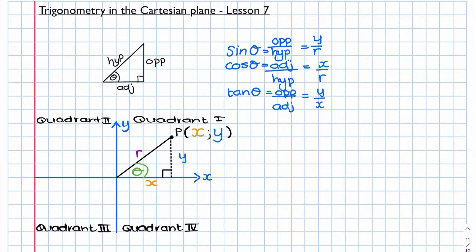You may ask why can't we just keep using opposite, hypotenuse, and adjacent instead of y, x, and r? The reason is that when we move into the other three quadrants it becomes easier to work with the coordinate values, because our reference angle changes and it's not always as easy as working it out in the first quadrant. Let's look at an example in the first quadrant to see how this works.